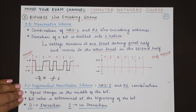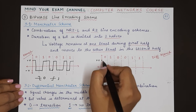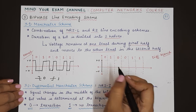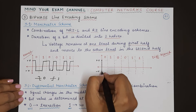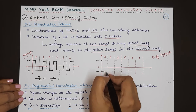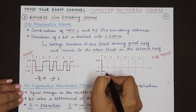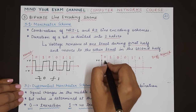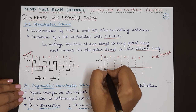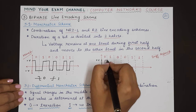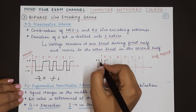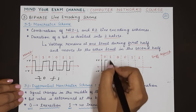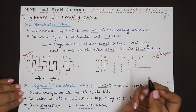Zero means transition. So we transition from positive to negative, remain at negative until the middle of the bit, then transition in the middle and remain at positive voltage until the end of the bit.